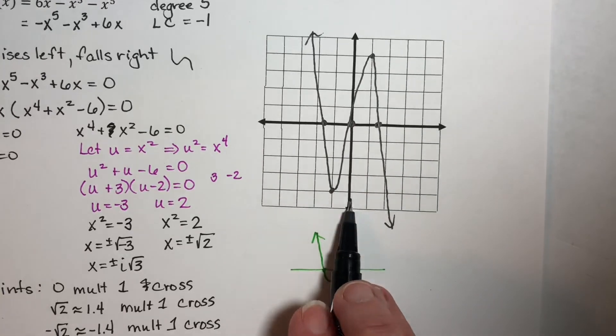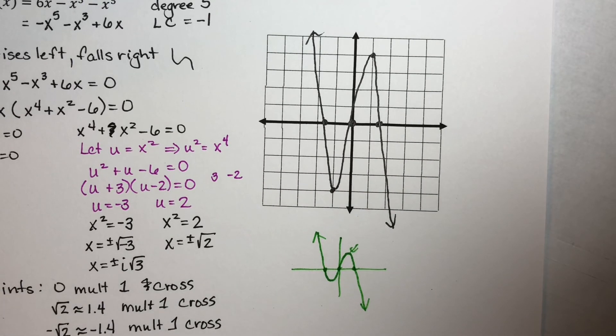The maximum number of turning points we were allowed was 4. We only used 2, and that's okay. You don't have to use them all. You just make sure that you didn't use more than what you were allowed. And here, you have a decent idea of what your graph should look like.